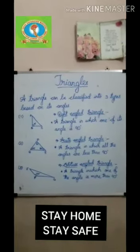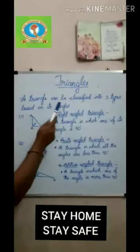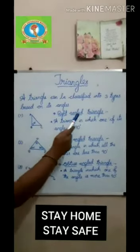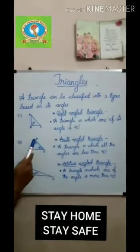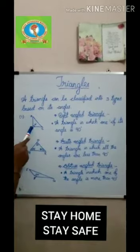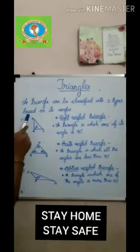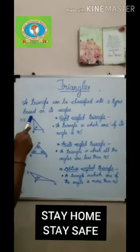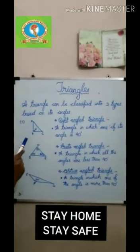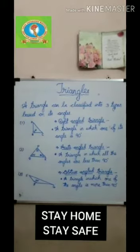Now, a triangle can be classified into three types based on its angles. First, it is the right angle triangle. A triangle in which one of its angles is 90 degrees is called a right angle triangle. Here in triangle ABC, it is a right angle triangle.